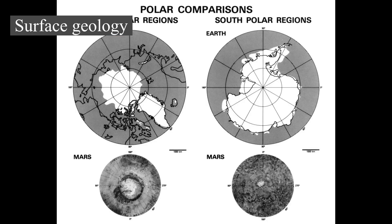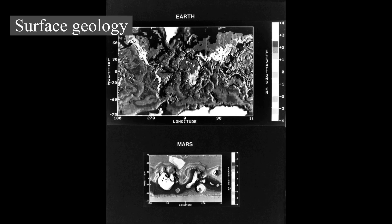The geological history of Mars can be split into three primary periods. The Noachian Period, from 4.5 to 3.5 billion years ago, marks the formation of the oldest extant surfaces of Mars, scarred by many large impact craters. The Tharsis Bulge, a volcanic upland, is thought to have formed during this period, with extensive flooding by liquid water late in the period.